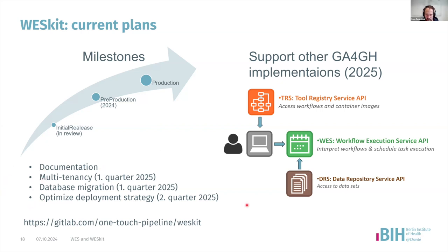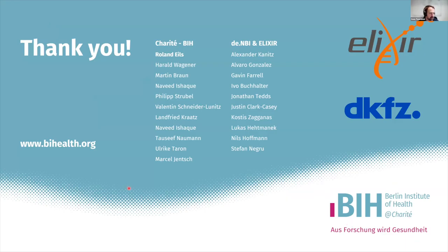We will also implement the other GA4GH cloud service APIs more directly in WESkit — for example, so workflows can more easily be accessed via the TRS interface, and data can also be made available via the DRS interface. Those are my main collaboration partners, either here internally at BIH or in Germany at the German ELIXIR node.